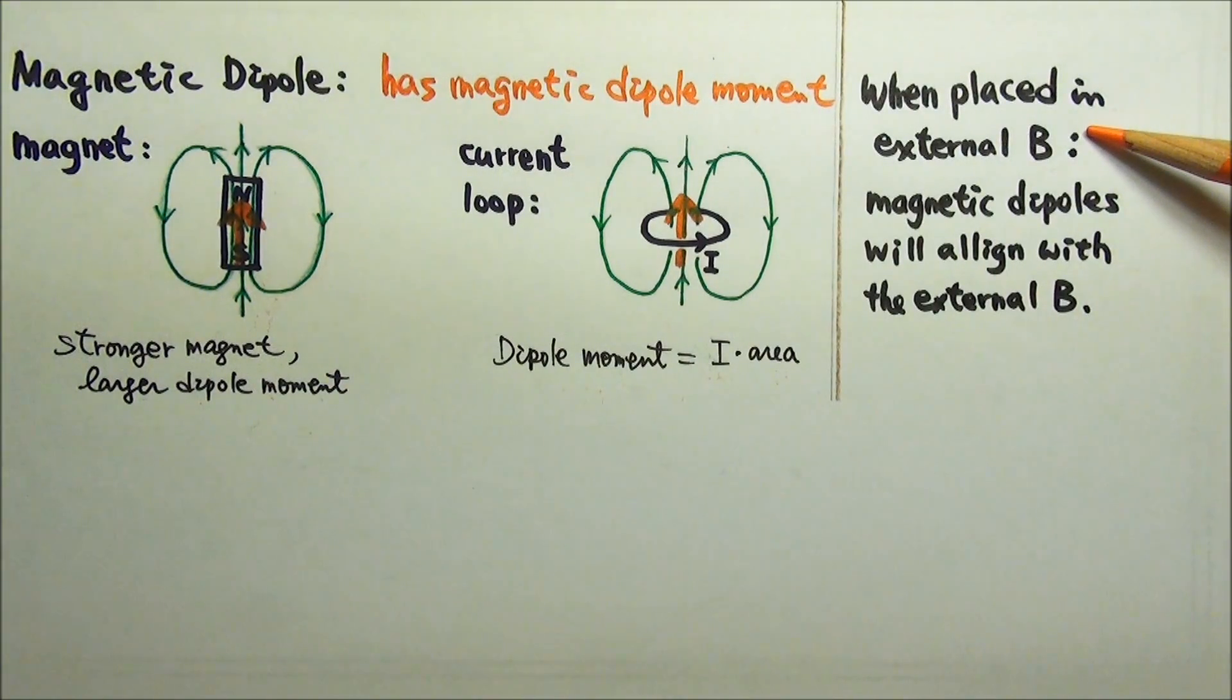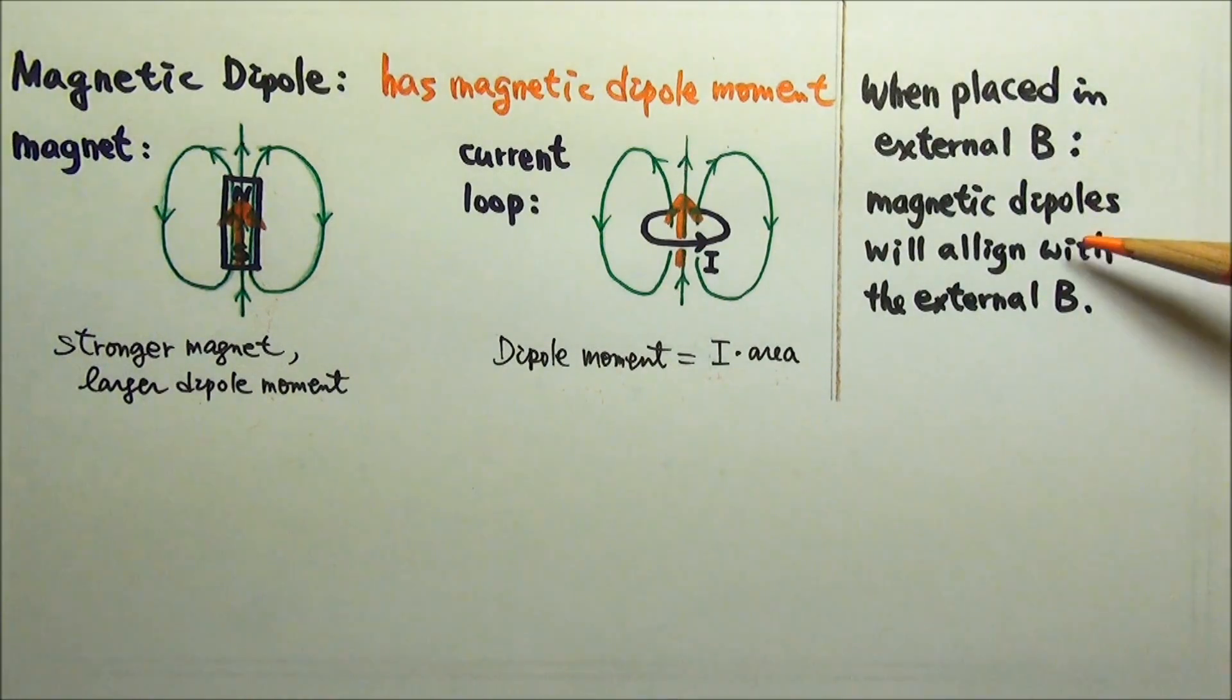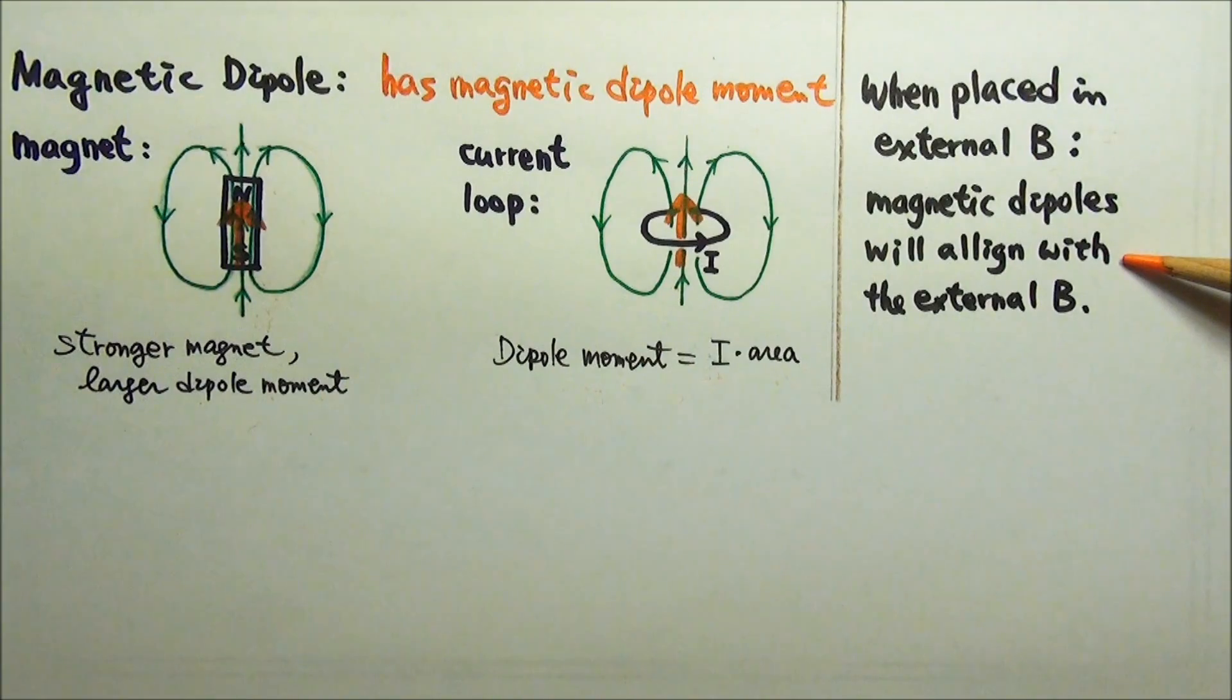And when we place a magnetic dipole in a much stronger external magnetic field, the dipole will align with the external magnetic field, so that the magnetic dipole moment vector aligns with the external magnetic field.